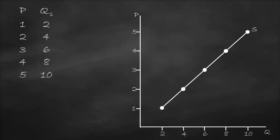This is our supply schedule for chocolate and this is our supply curve for chocolate. So if I tell you at a price of two, what's our quantity supplied? It's four. From the graph, at a price of two, I will go horizontally, then intersect with the supply curve, and then I will go vertically — I will get here quantity supplied is four. This point I will label as point A.